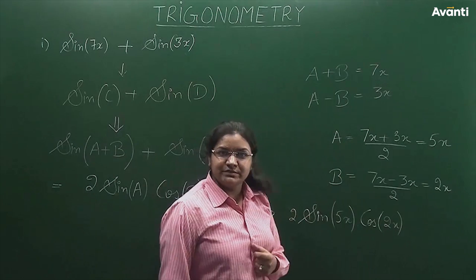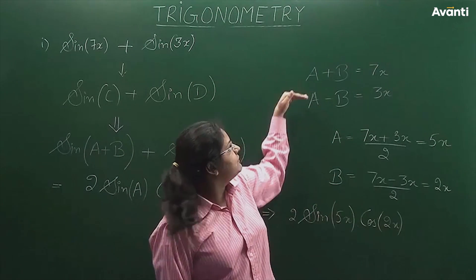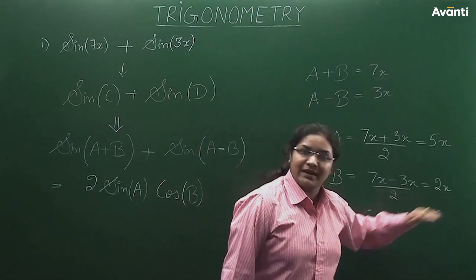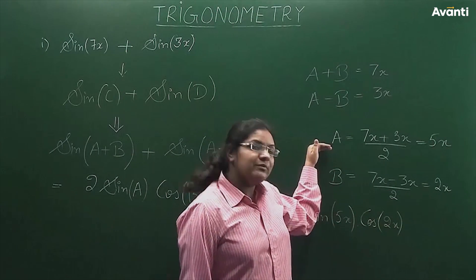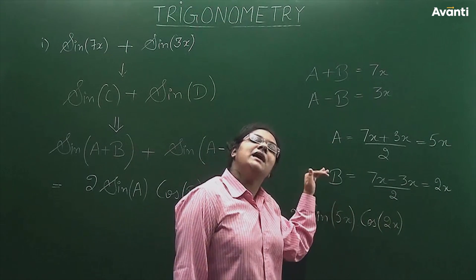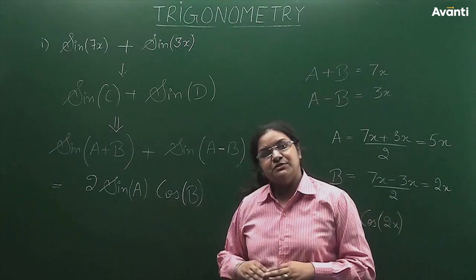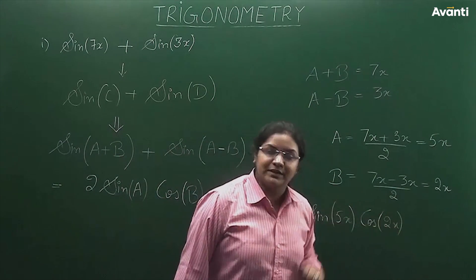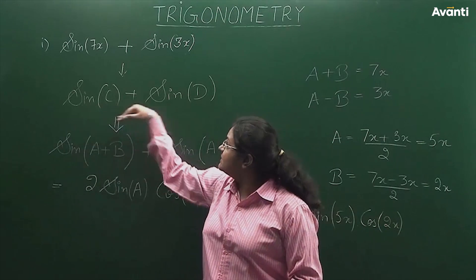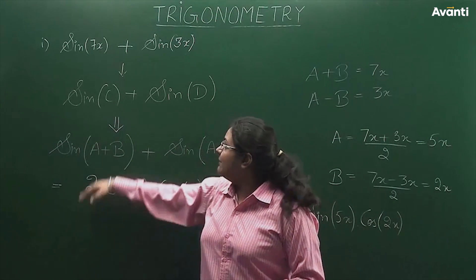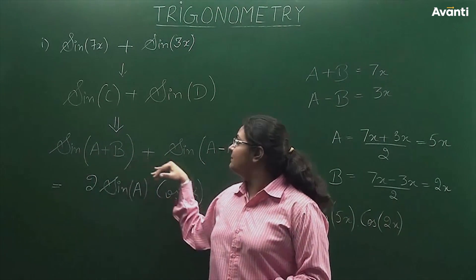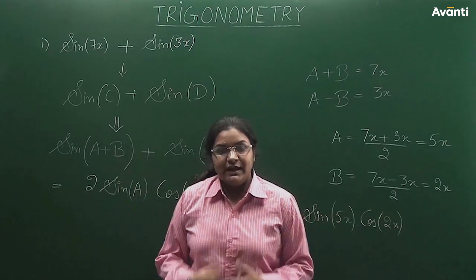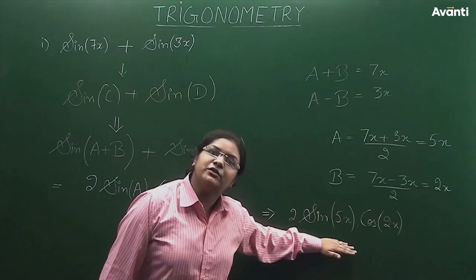Similarly, if I subtract the two equations, b will be 2x. Now I have the values of a and b. I substitute them into the expression, and my answer will be 2 times sine of 5x times cos of 2x. Whenever you have sine of c plus sine of d, you can write it in the form sine of (a+b) plus sine of (a−b), find a and b, and express the result as a product of two functions.